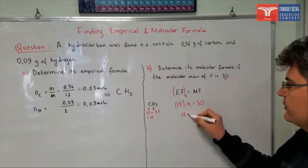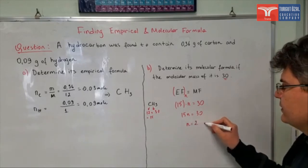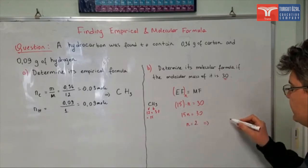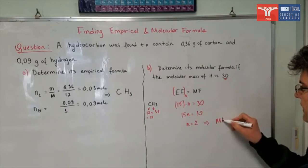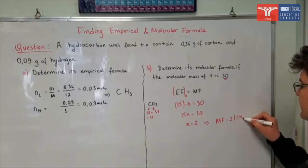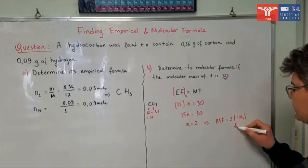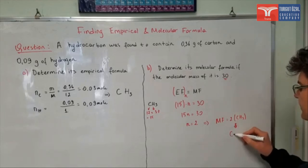So 15N is equal to 30, so N is equal to 2. From here, we can say that the molecular formula is 2 times bigger than the empirical formula, which was CH3. So we can say that the molecular formula is C2H6.